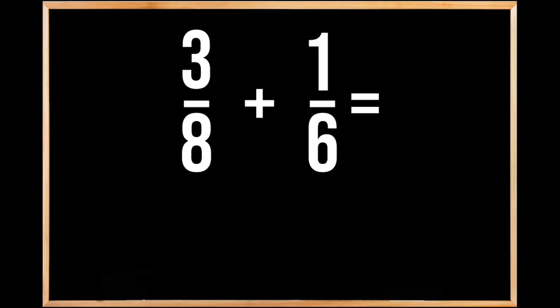To find a common denominator, we're going to multiply the value of our denominators together. So we're going to multiply 8 times 6, which gives us 48. Down below, we're going to rewrite these fractions with a common denominator of 48.